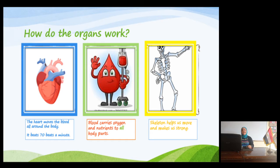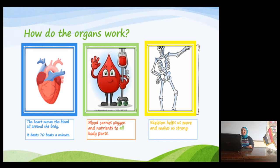Here we will see how the organs work. The first picture is the heart. The heart moves the blood all around your body, and it beats 70 times a minute. Can you imagine that? Next picture is blood — you see the nice picture.